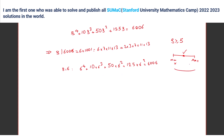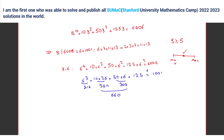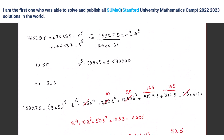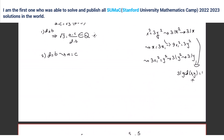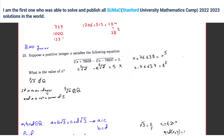If you divide by 6, you get s³ plus 10 times 36 plus 50 times 6 plus 125 equals 1,001. Six cubed is 216, plus 360, plus 300, plus 125 — that gives 216 plus 360 is 576, plus 300 is 876, plus 125 is 1,001. That's correct! So s equals 6 and r equals 11.